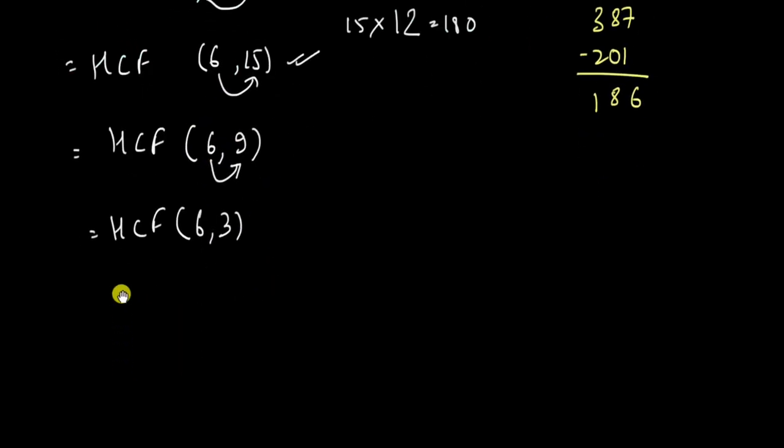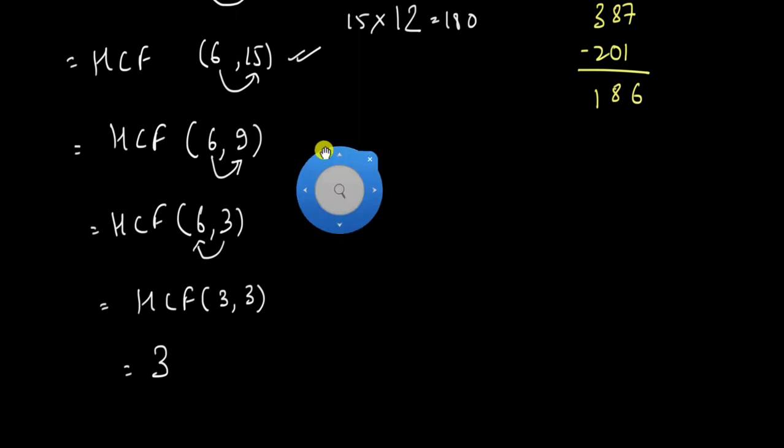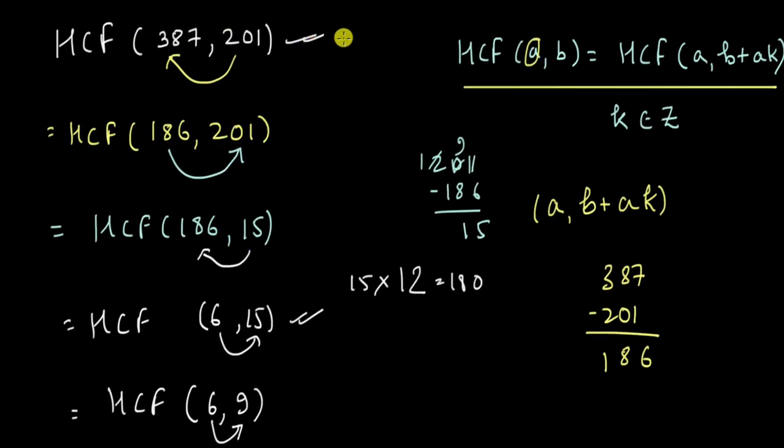I am getting excited here. And finally I can keep 3 the same and subtract that from 6. So I get HCF of 3 and 3. This is 3. This is the common factor between 3 and 3. So the answer of this problem is 3.